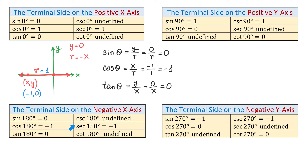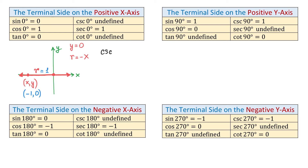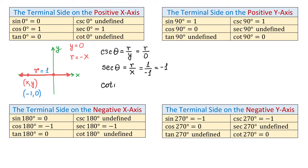Cosecant(θ) = r/y; because y is 0, r/0 is undefined. So cosecant of 180° is undefined. Secant(θ) = r/x; r and x are opposites, so 1/(−1) = −1. So secant of 180° is −1. Cotangent(θ) = x/y; because y is 0, x/0 is undefined. So cotangent of 180° is undefined.